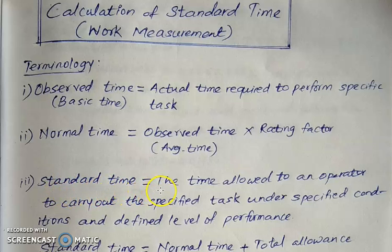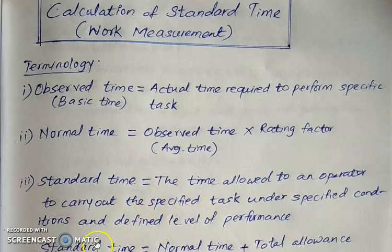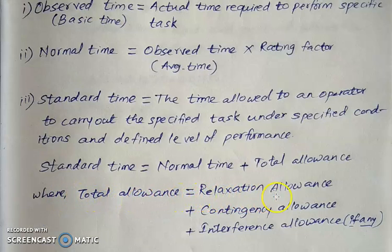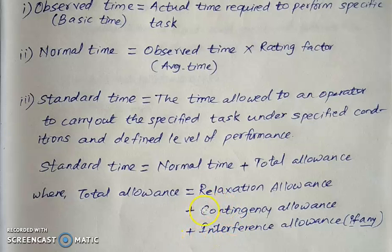Standard time is the time allowed to an operator to carry out the specified task under specified conditions and at the defined level of work performance. Mathematically, standard time equals normal time plus total allowance. Total allowance is composed of relaxation allowance, plus contingency allowance, plus interference allowance if applicable, plus policy allowance if mentioned. We have to consider all types of allowances while determining standard time.